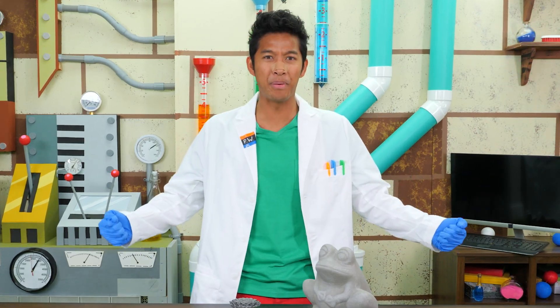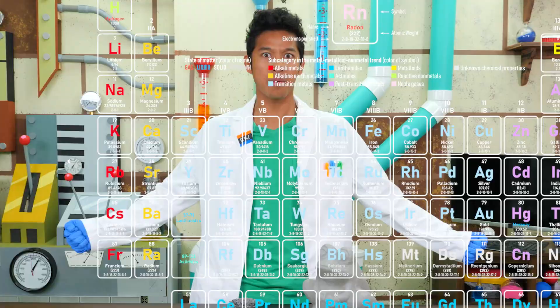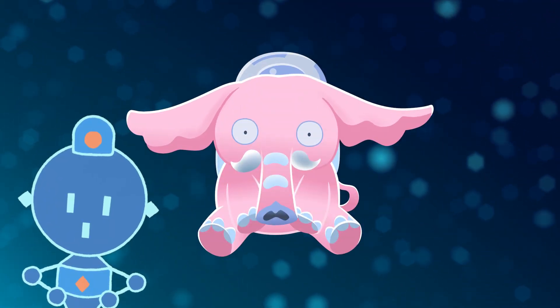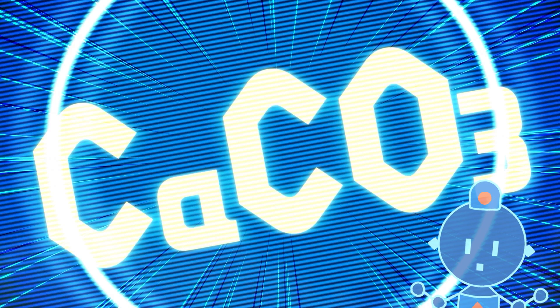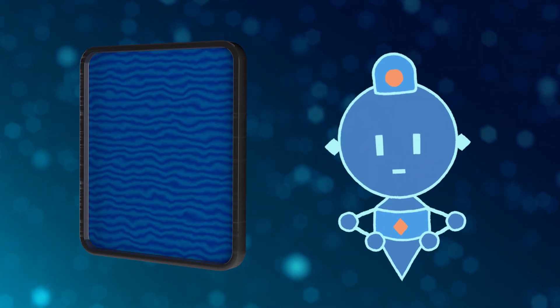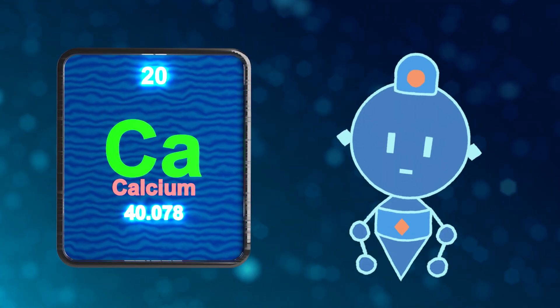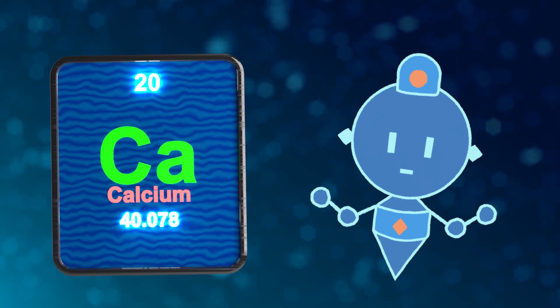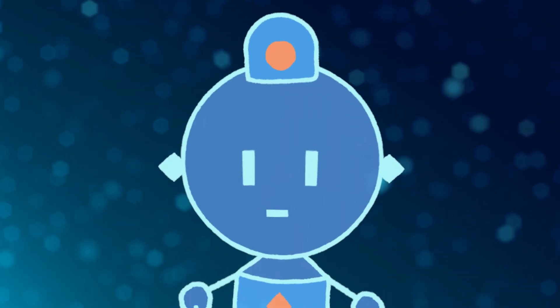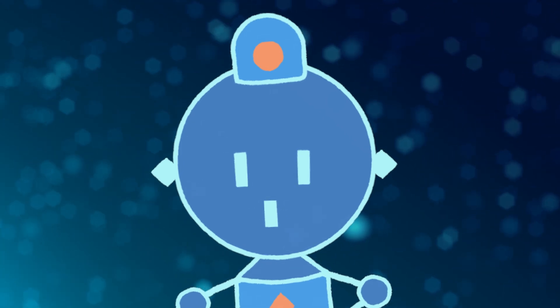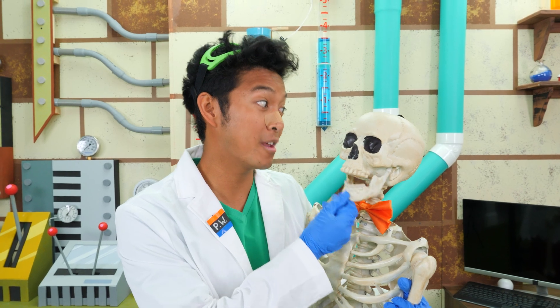With the power of the periodic table! The Elements Cementos' chemical composition is CaCO3. The Ca is for calcium, atomic number 20, classification: alkaline earth metal. Hey, I know about calcium! My buddy here is made mostly out of calcium. That is accurate. Calcium is abundant in living and non-living things. Skeleton man over here is definitely not living.